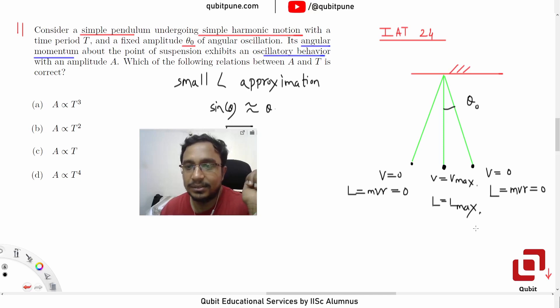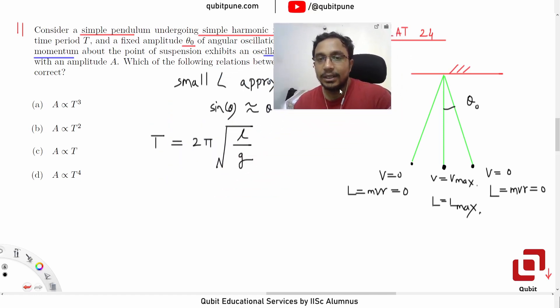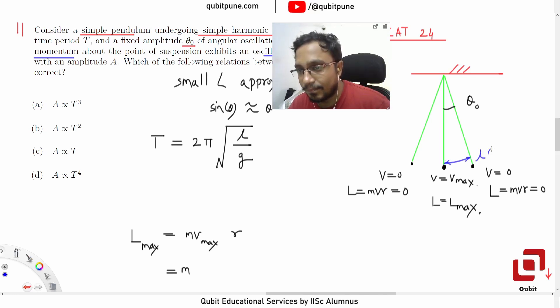And we have to now determine the proportionality relationship between the angular momentum and the time period. So how can we do this? Firstly, write down the expression for the angular momentum at the center. So what is it? L max equals mass into V max into R. What is V max? V max is the amplitude into natural frequency. So what is the amplitude of this motion, linear amplitude I am saying? If we assume that the length of the pendulum is L, then this displacement has to be L theta naught. Arc length equals radius into angle, but we are approximating it.